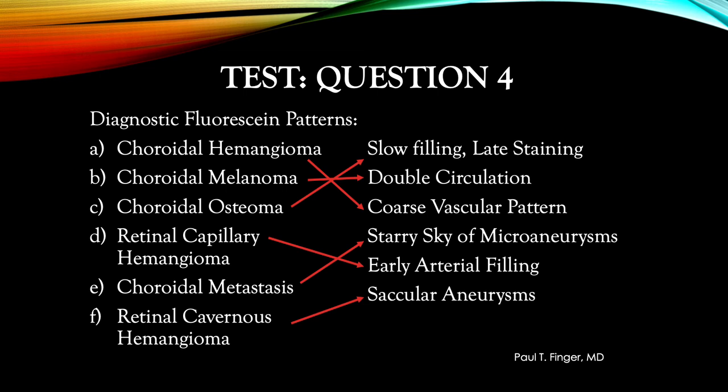The retinal capillary hemangioma was a high-flow system where it was crucial to get those early phase images on the angiogram. Choroidal metastasis were characterized by a starry sky of microaneurysms — many more than you would see with a melanoma or even hemangioma. Lastly, the retinal cavernous hemangioma has those pathognomonic low-flow saccular aneurysms with sedimentation that makes them appear half-filled in the mid to late phases of the fluorescein angiogram.